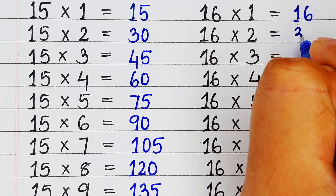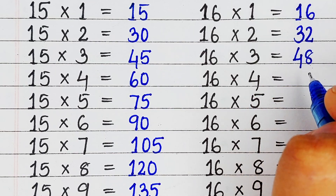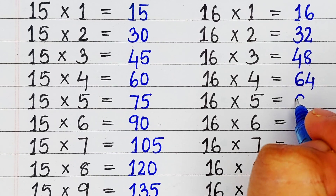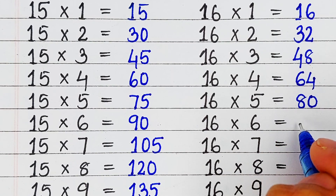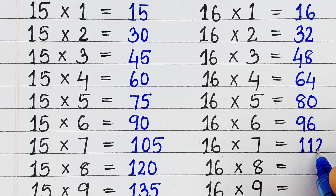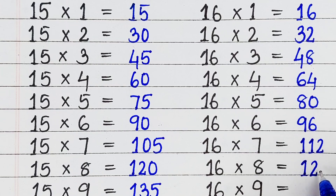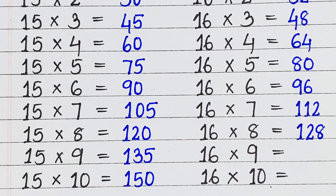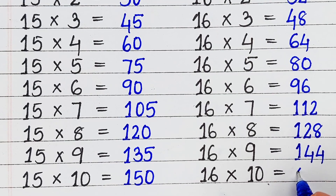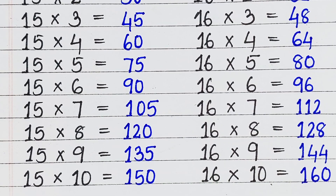Next is the table of 16. Let's start. 16 1s are 16, 16 2s are 32, 16 3s are 48, 16 4s are 64, 16 5s are 80, 16 6s are 96, 16 7s are 112, 16 8s are 128, 16 9s are 144, 16 10s are 160.